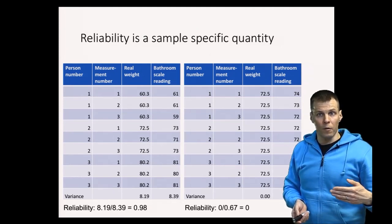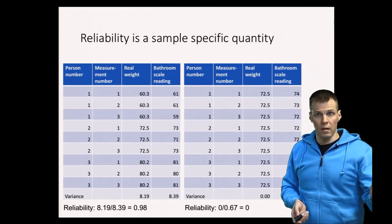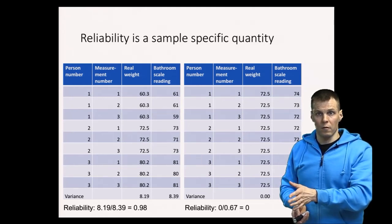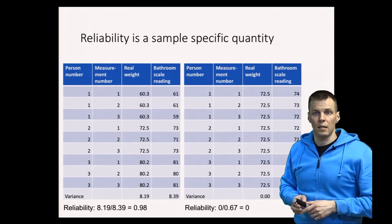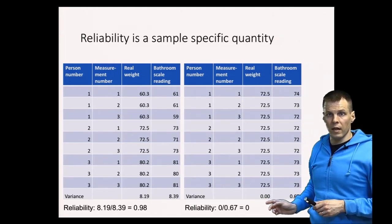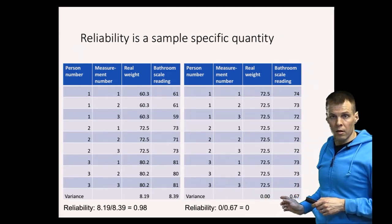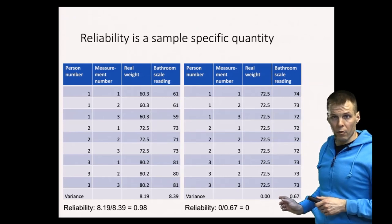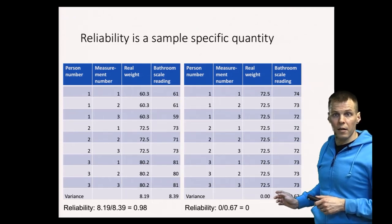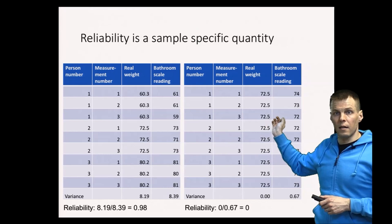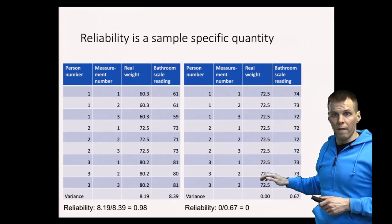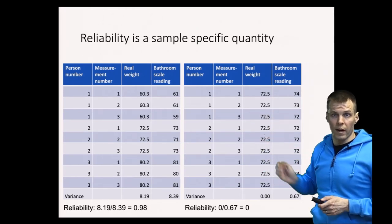Because it's a ratio of true score variance divided by the total variance of the data. One way to understand this is that any readings here, any variation of the readings is purely due to measurement error because there's no variation. So this variation here doesn't tell us anything about how these people vary on their weights because there is no variance.